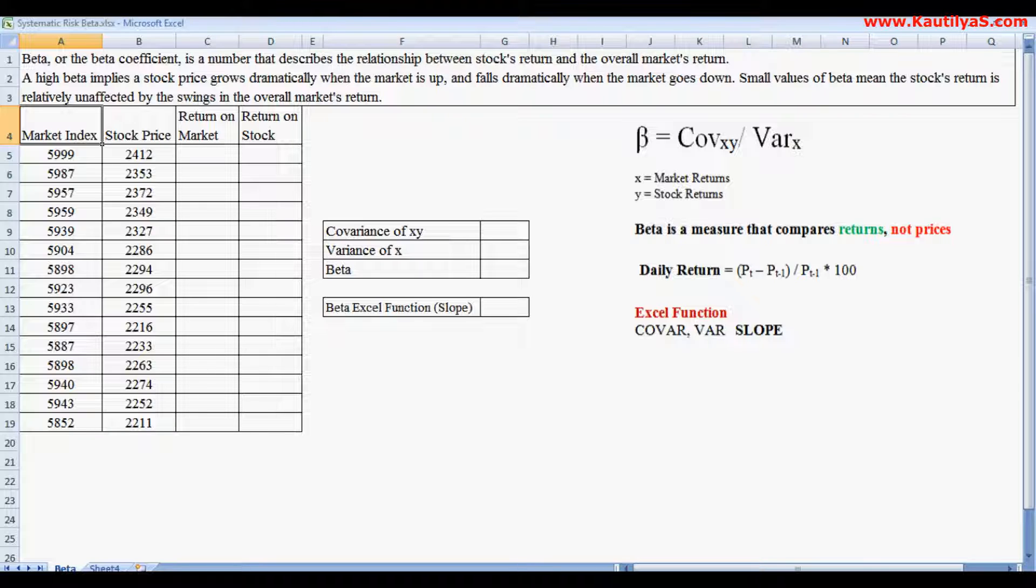Generally, stocks with a beta of 1 are considered to move in tandem with the market, whereas stocks with a high beta are more aggressive and stocks with low beta, less than 1, are defensive stocks.